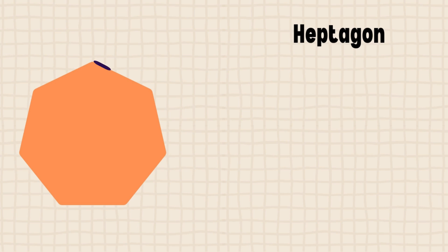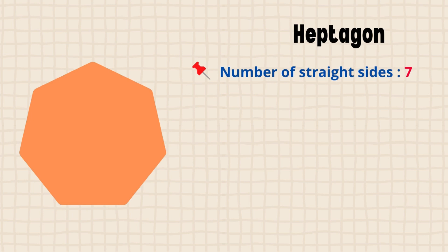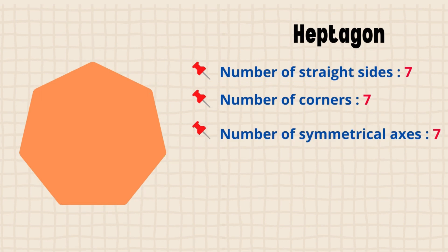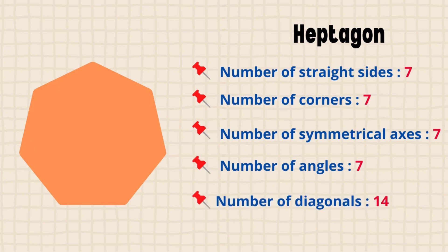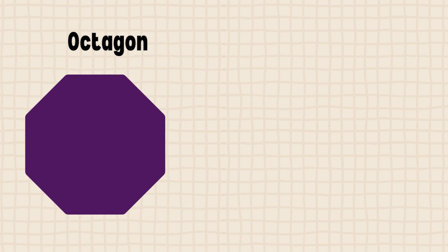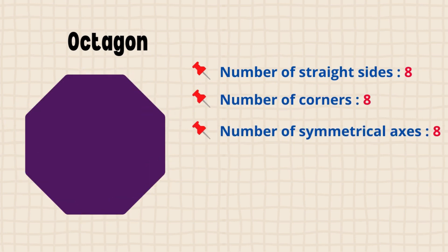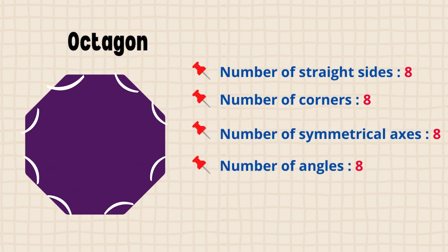This polygon has seven straight sides, seven corners, seven symmetrical axes, and seven angles. This is an octagon. An octagon has eight straight sides, eight corners, eight symmetrical axes, eight angles, and twenty diagonals.